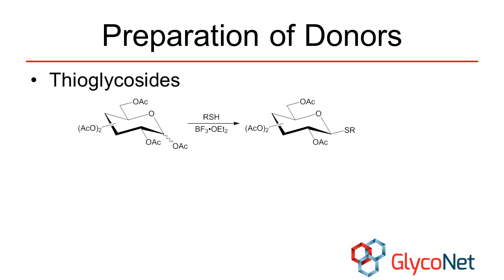Thioglycosides, together with the trichloroacetimidates shown on the next slide, are the most common donors used today. Like glycosyl halides, they can also be prepared from peracetylated precursors.